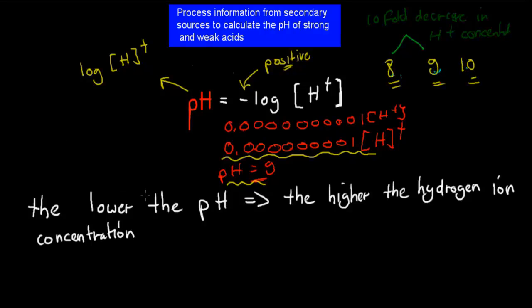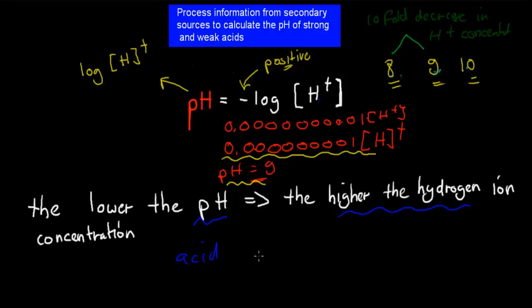What you should also remember is the lower the pH, the higher the hydrogen ion concentration. Using that formula, a low pH equals a high concentration of ions, whereas a high pH equals a low concentration of ions. The more zeros there are, the higher the pH; the fewer zeros, the lower the pH. That's also important because acids have a low pH, and the reason why is because they have a high hydrogen ion concentration.